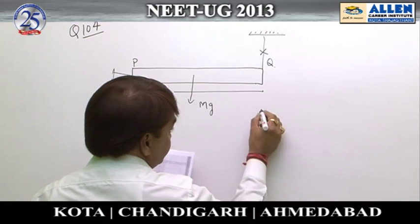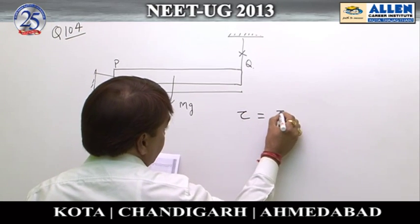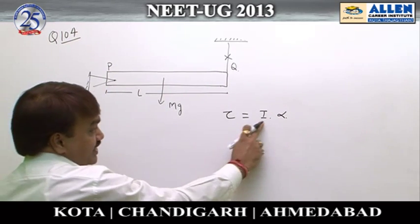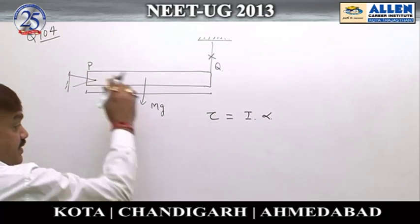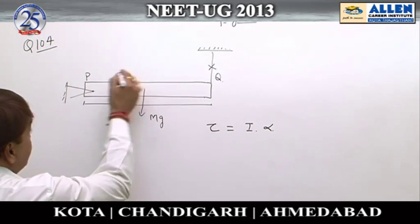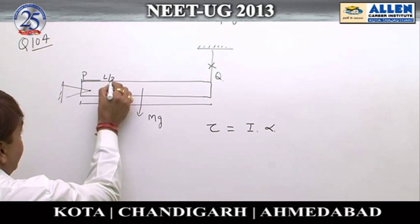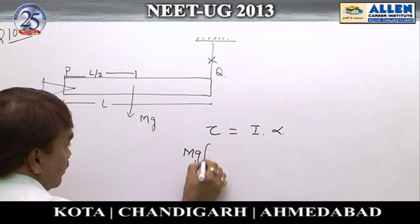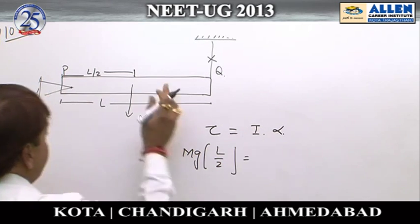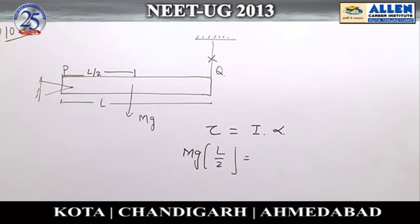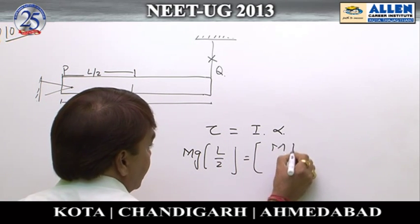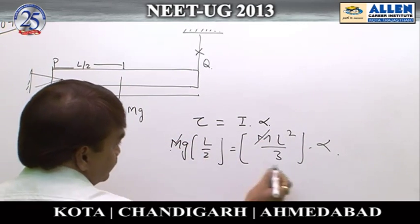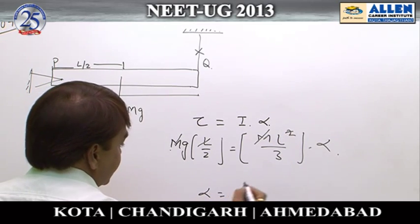We know that torque equals I·alpha (τ = Iα), where I is the moment of inertia and alpha is the angular acceleration of the rod about point P. The torque equals force mg times the moment arm L/2. The moment of inertia of the rod about one end is mL²/3. Simplifying: alpha equals 3g divided by 2L.